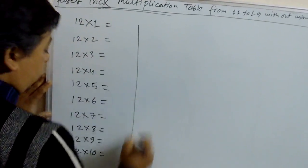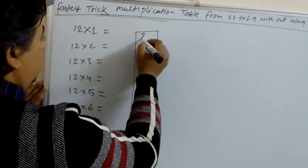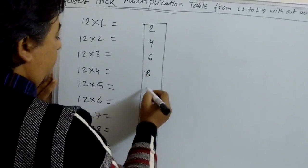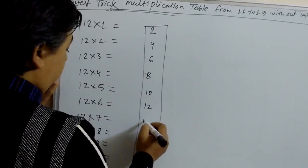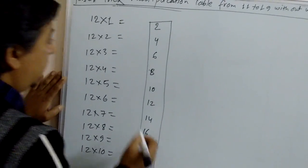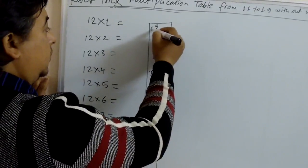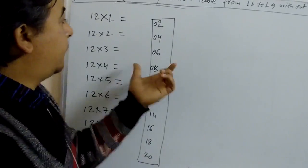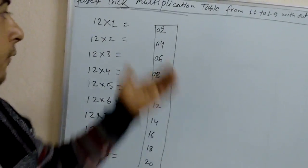First, I'll read the table of 2 here: 2×1 is 2, 2×2 is 4, 2×3 is 6, 2×4 is 8, 2×5 is 10, 2×6 is 12, 2×7 is 14, 2×8 is 16, 2×9 is 18, 2×10 is 20. Now make each a double digit — if it is a single digit, keep 0 at the front of that number.